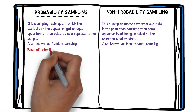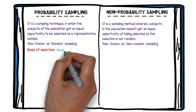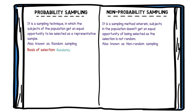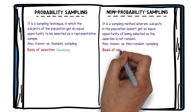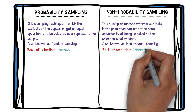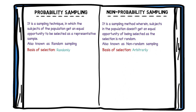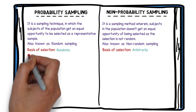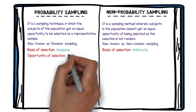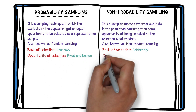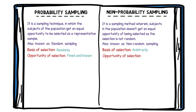On the basis of selection, probability sampling is purely random — we don't know exactly which entity is going to get selected as a sample. But in the case of non-probability sampling, the basis of selection is arbitrary, as researchers or scientists choose any of the samples which they are interested in studying. The chances of selection in probability sampling are fixed and known, whereas in non-probability sampling, the selection probability is neither specified nor known because it depends on the individual researcher and which sample they are going to select.